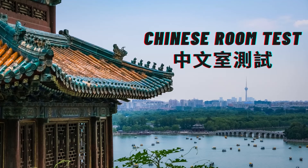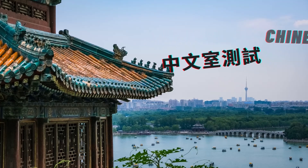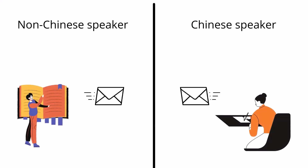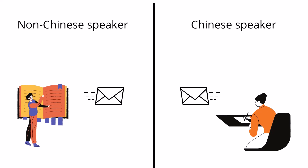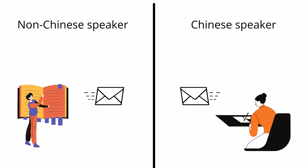Now let's have a look at the Chinese Room test. The Chinese Room thought experiment was proposed by John Searle in 1980. The setting consists of a non-native Chinese speaker in a room with an instruction manual in English and some Chinese characters. A Chinese speaker would then communicate with messages written in Chinese characters, passing them to the person in the room via a slot in the door.